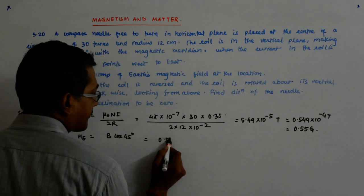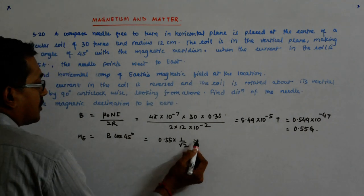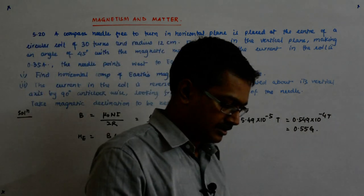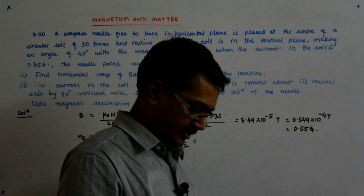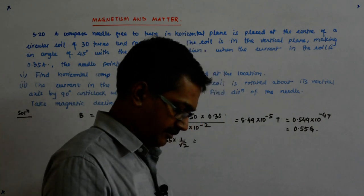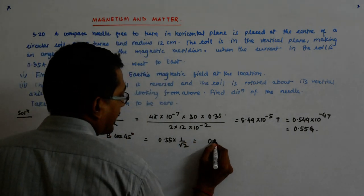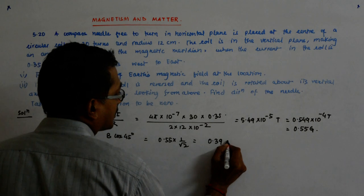So that is 0.55 into 1 upon root 2. So that gives me 0.55 into cos 45. So that gives me 0.388, 0.39 Gauss.